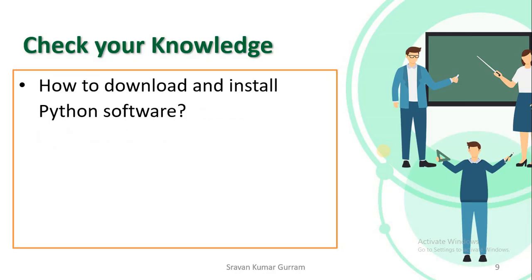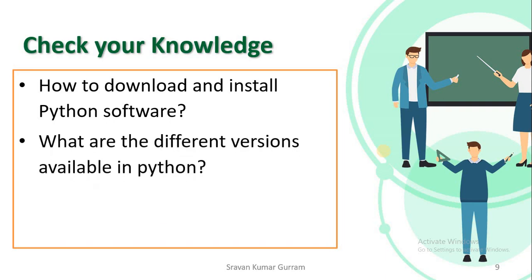Let us check what you learned from this video. To download and install Python software, go to the official website python.org — though you can download from other websites, the official one is recommended. We also covered the installation process. The different versions available are Python 1.x, 2.x, and 3.x, with the latest version being Python 3.11 as of now. We also discussed how to set the path during installation.